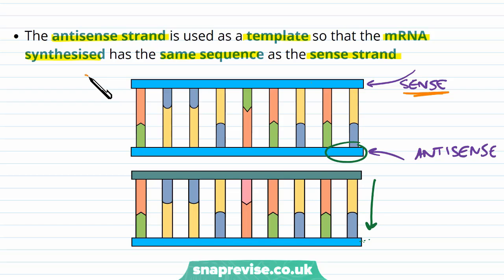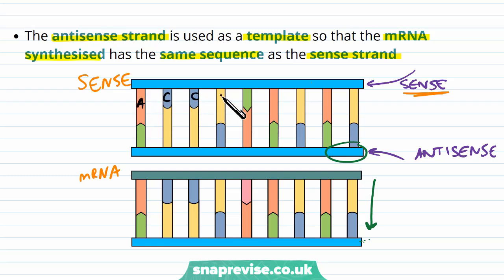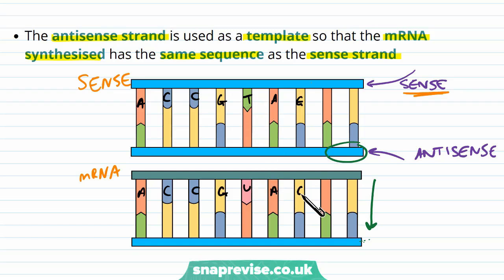You can see this for yourself. The sense strand reads A, C, C, G, T, A, G. The mRNA reads A, C, C, G, U instead of T — because this is mRNA, not DNA — A and G. So it's identical to the sense strand. The mRNA just uses the template strand as a template to work on.